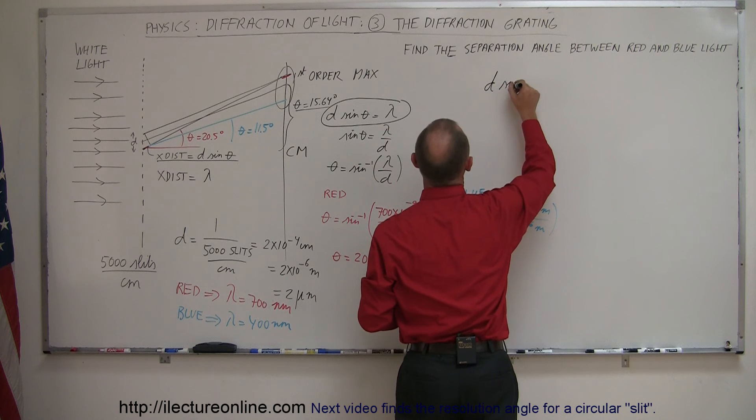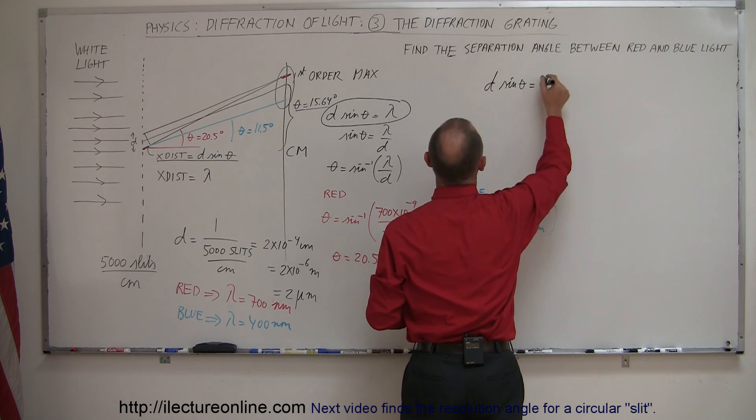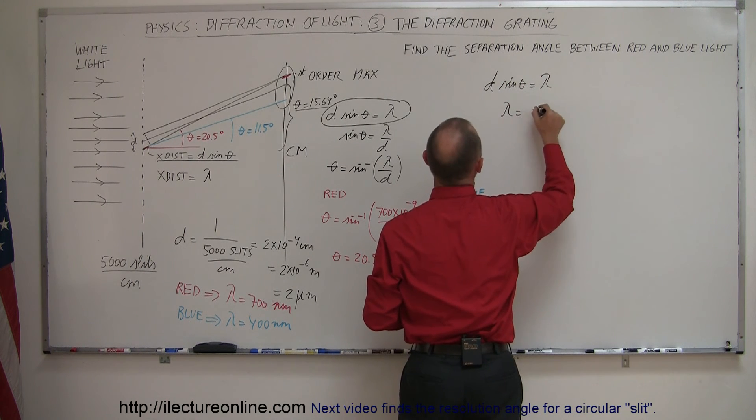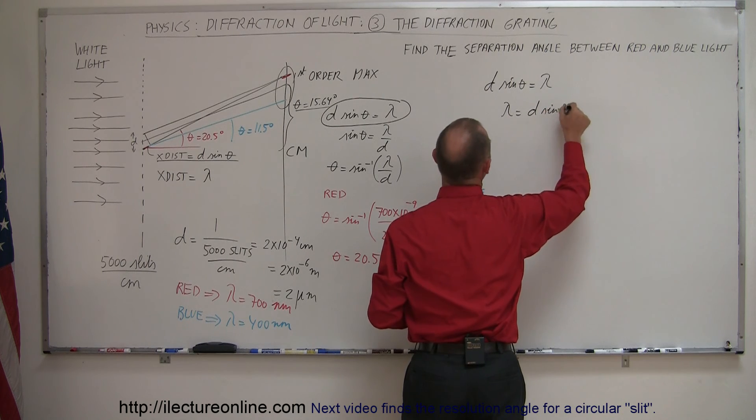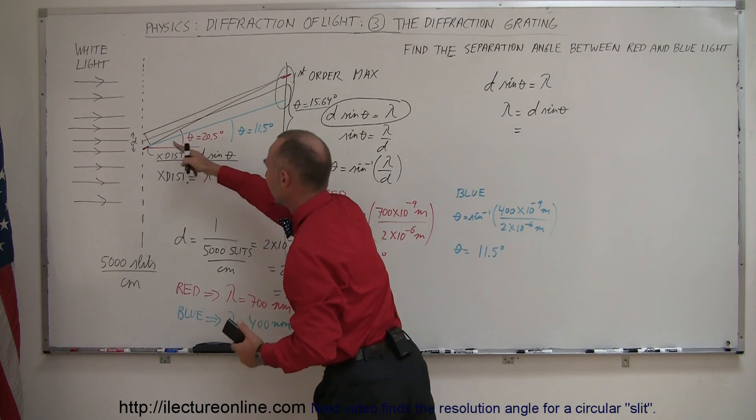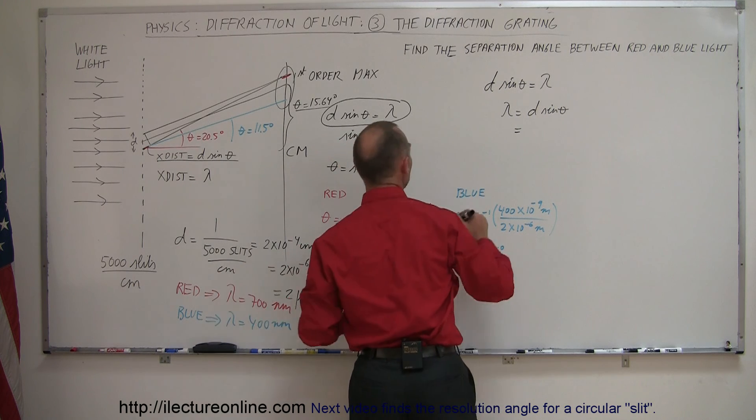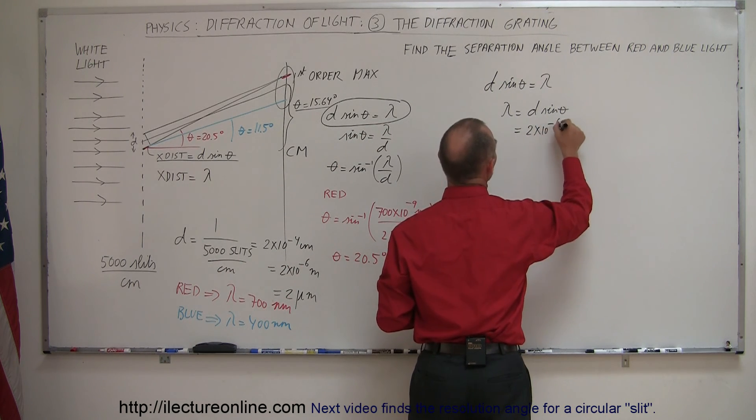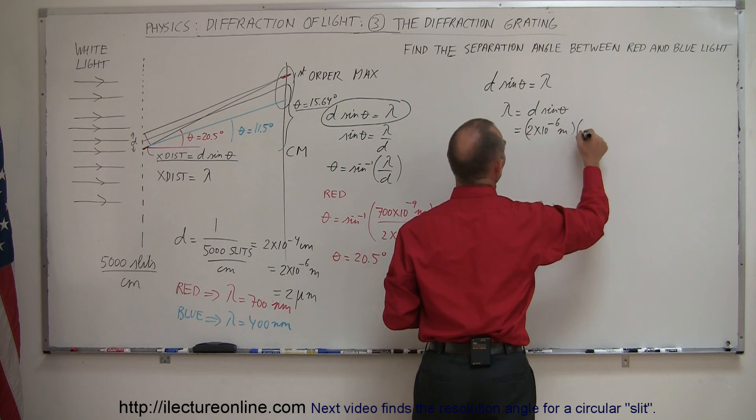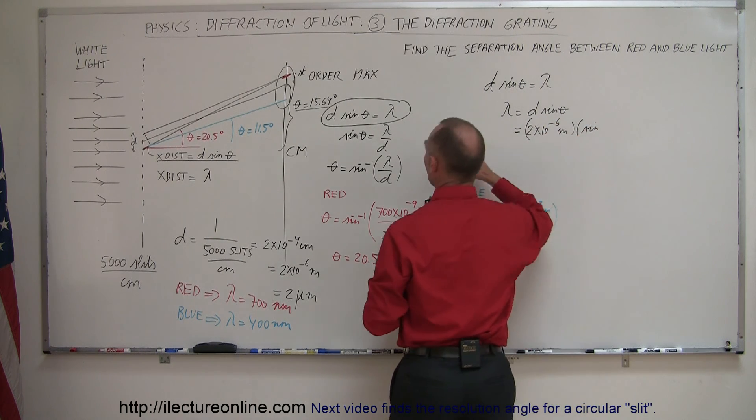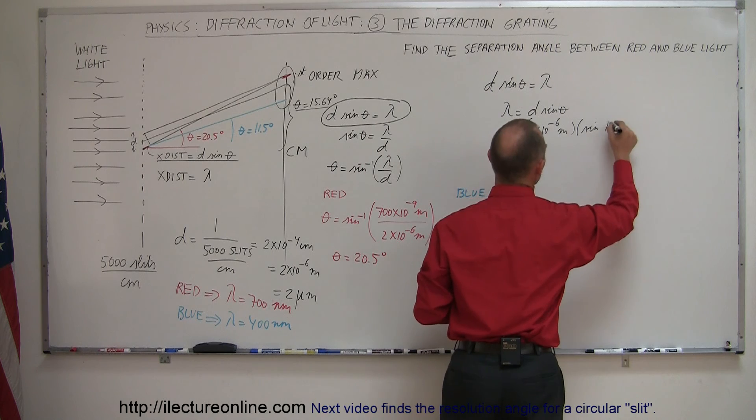We can say that d sine theta is equal to lambda, and so lambda is equal to d sine theta, and d is of course the separation distance between the slits we found to be two micrometers. So that's two times ten to the minus six meters, and we multiply it times the sine of the angle that we very carefully measure to be 15.64 degrees.